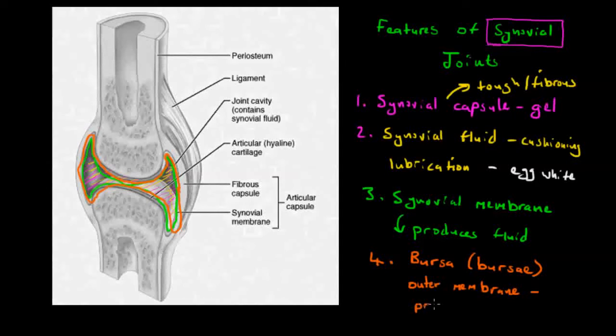And its real job, again very similar really, is to prevent friction. Prevent friction and rubbing. So there's another protective feature, another protective feature of a synovial joint.